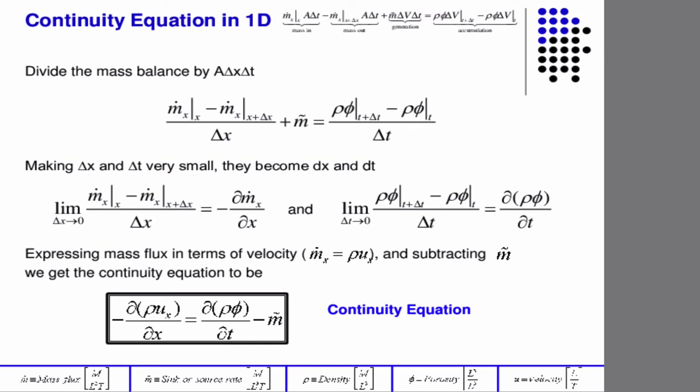And so then if you divide the mass balance by delta x delta t, you get an equation that looks like this. And then taking the limit as delta x goes to zero, and the limit as delta t goes to zero, well then you get the definition of a derivative, right? This is clearly the definition of a derivative from calc 1.